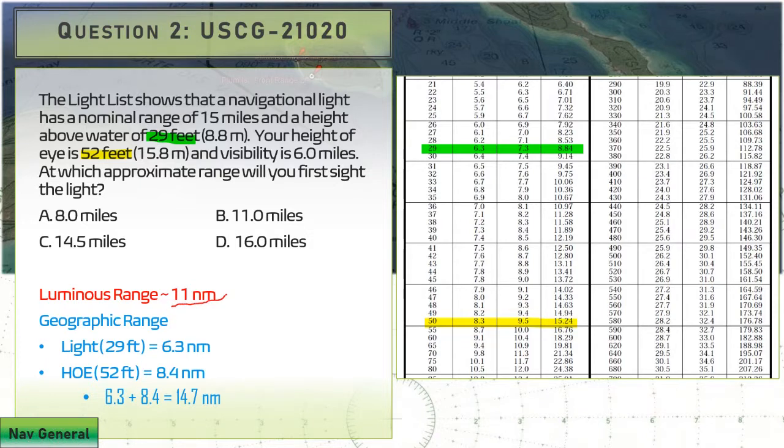Once we have both measurements dialed in, we just pick the one that is smaller of the two. We have 11 here, and that gives us answer B, Bravo, 11 miles.